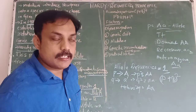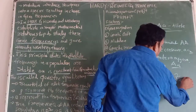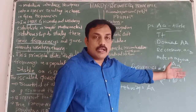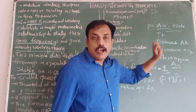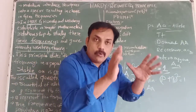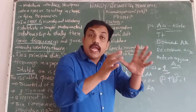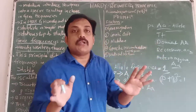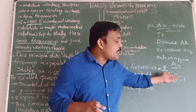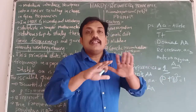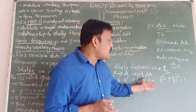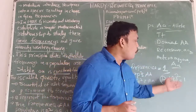As per the formula, (P + Q) squared equals one — we learned the algebraic expansion in earlier classes. P plus Q whole squared equals one. The expansion gives P squared plus 2PQ plus Q squared equals one. So the frequencies P squared, 2PQ, and Q squared are always stable and equal in a population. They showed through this mathematical theorem that the allele frequencies and gene pool are always constant.